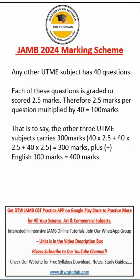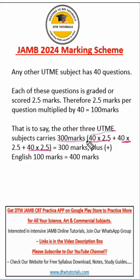For your other three subjects, each has 40 questions. Each question carries the same mark, which is 2.5. When you multiply 2.5 times 40, it gives you 100. So your other three UTME subjects carry 300 marks in total. Then when you add your compulsory subject, which is English, it gives you a total of 400. So this is the JAMB marking scheme — this is how I've broken it down for you to understand.